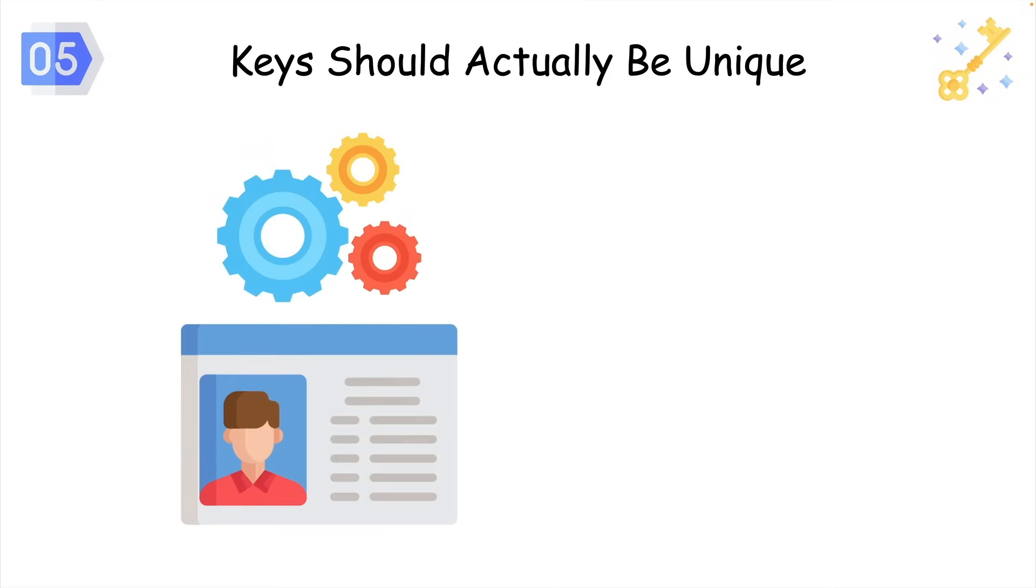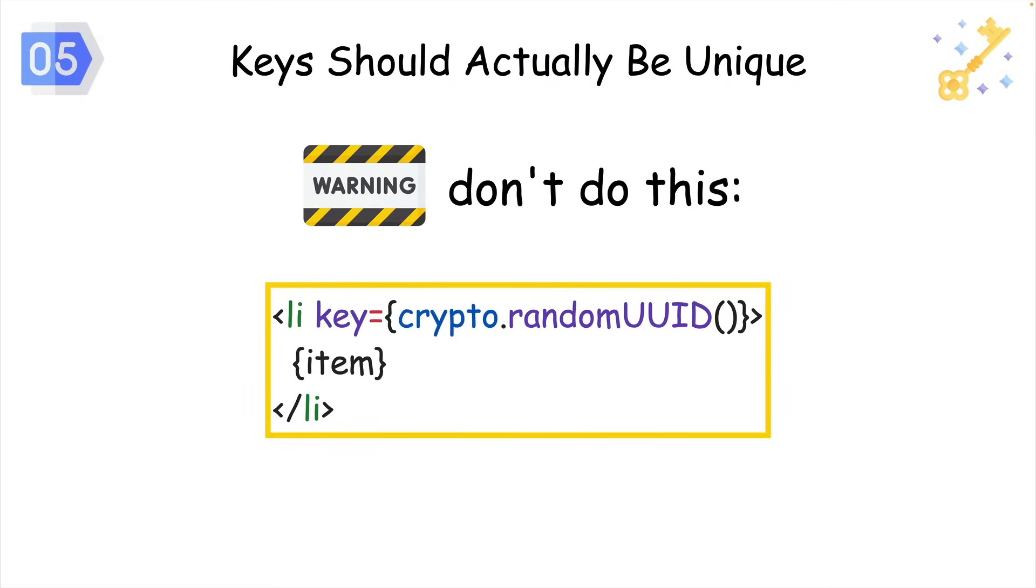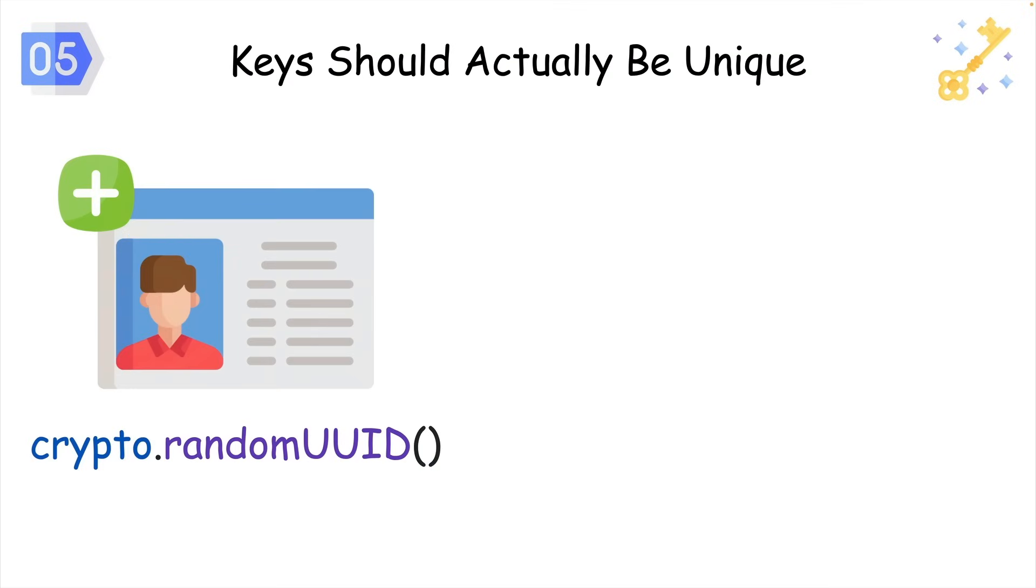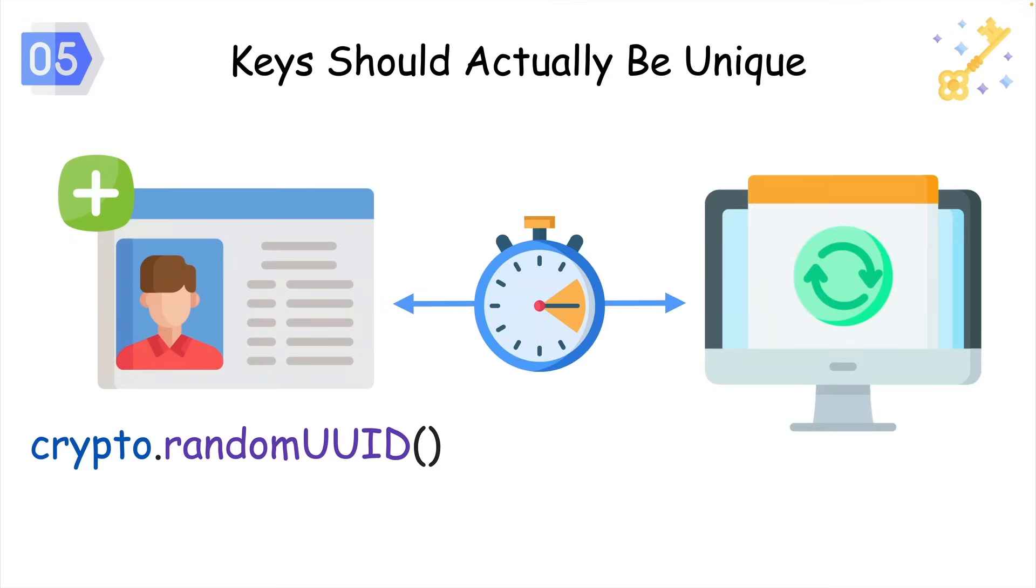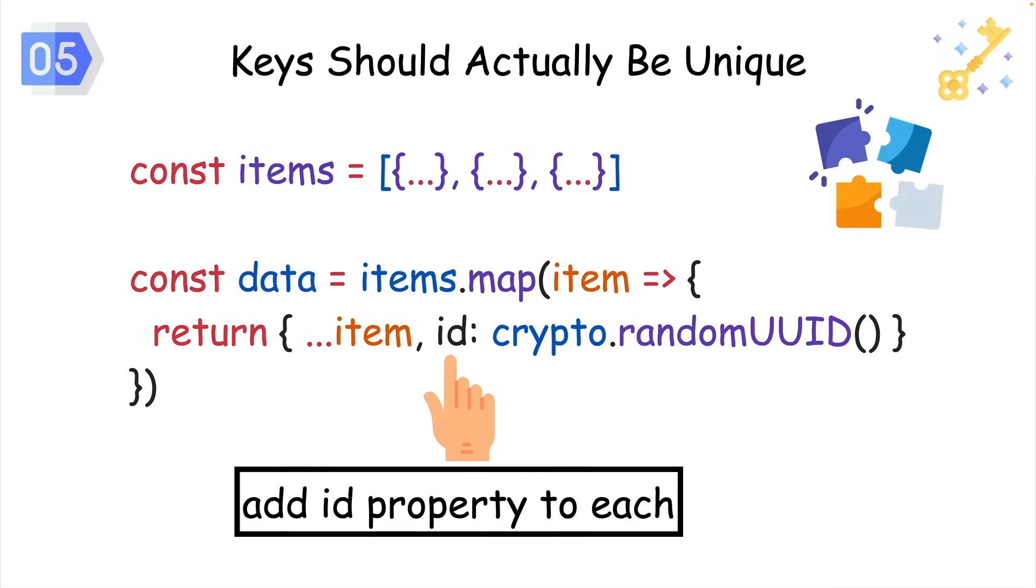But fortunately, there's a really easy way to create a unique ID in the browser with the CryptoRandomUUID function. But you should never call it like this. Doing this will create the ID on every render, which tells React to destroy and recreate your list items every time the key value changes. Make sure to generate the ID only when your state is updated. If you have an array of objects, it's a great pattern to add the ID as a separate property on each element.